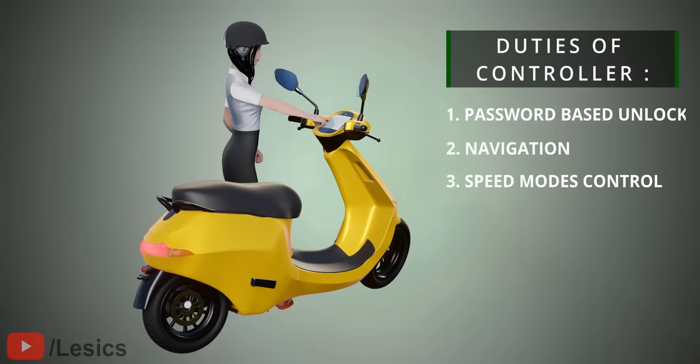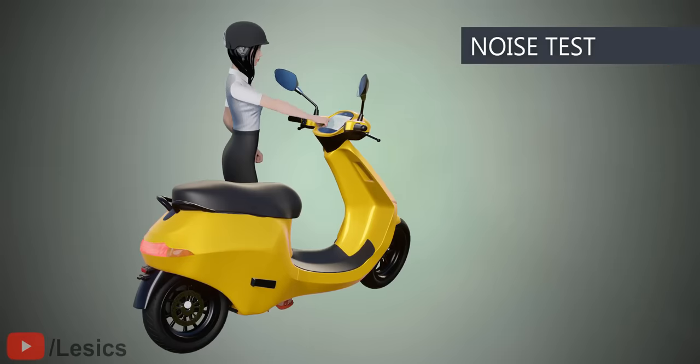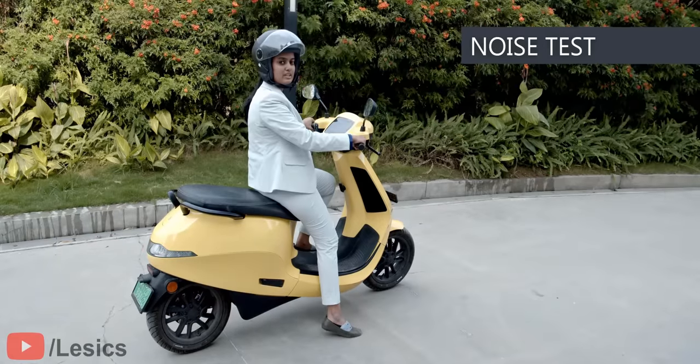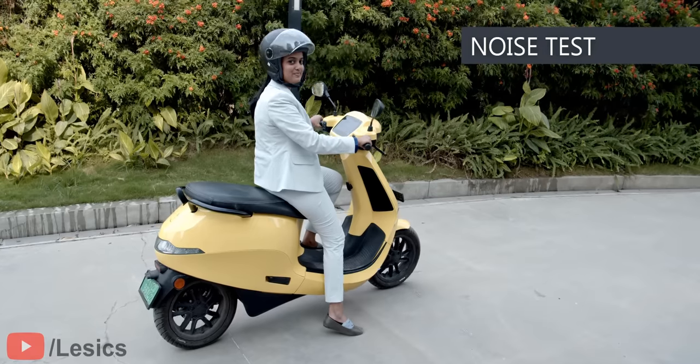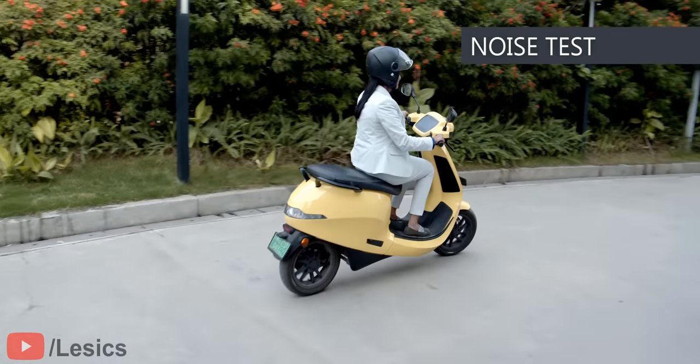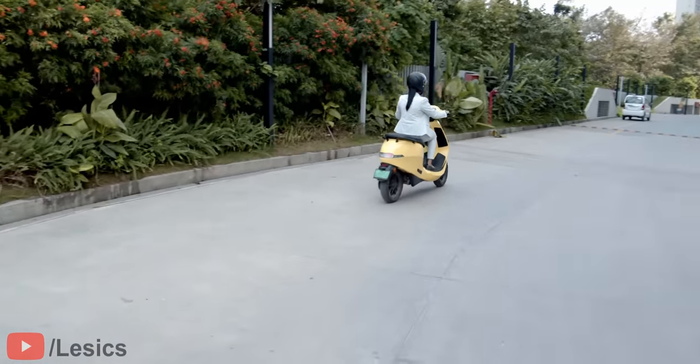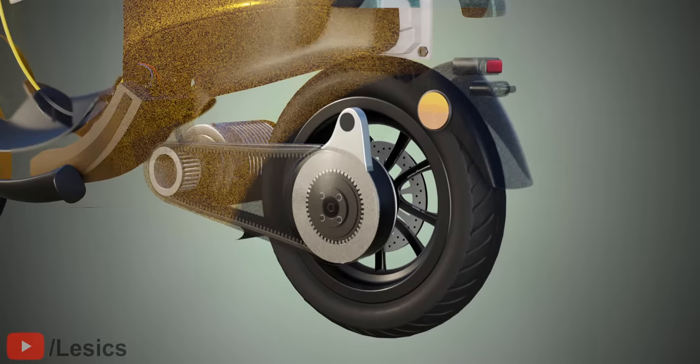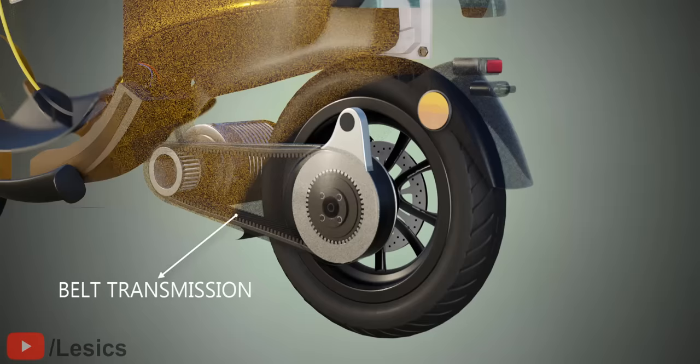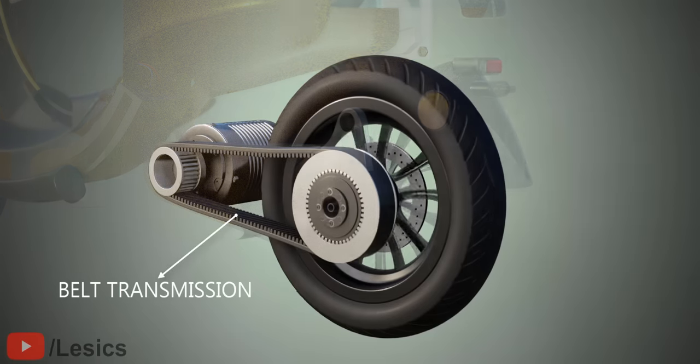Now, let's drive this scooter and check for its noise. The Ola scooter sounds so silent, you won't even notice it. The reason for the noise difference between the Ola and other e-scooters is the transmission. As you can see, the IPM motor is placed in the center of the Ola scooter, and the rotational energy is transferred to the rear tire via belt transmission. This is a single-stage transmission.